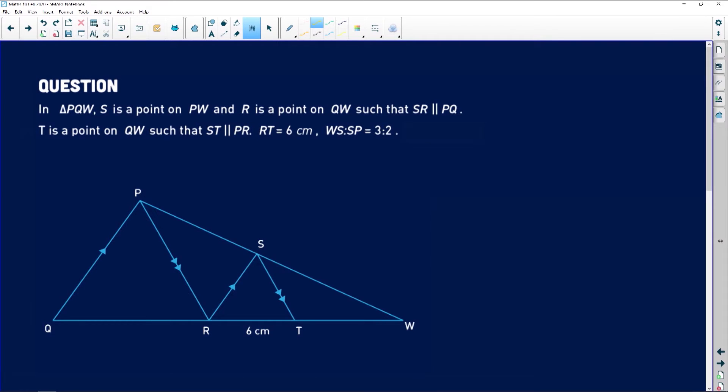This question says in triangle PQW, we've got a point S which is on PW and R is a point on QW. You can see that there's point S that lies on the line PW and there's also point R that lies on that other straight line which is line QW. We're told that T is a point on QW, and we see that ST is parallel to PR. That's very important to keep in mind.